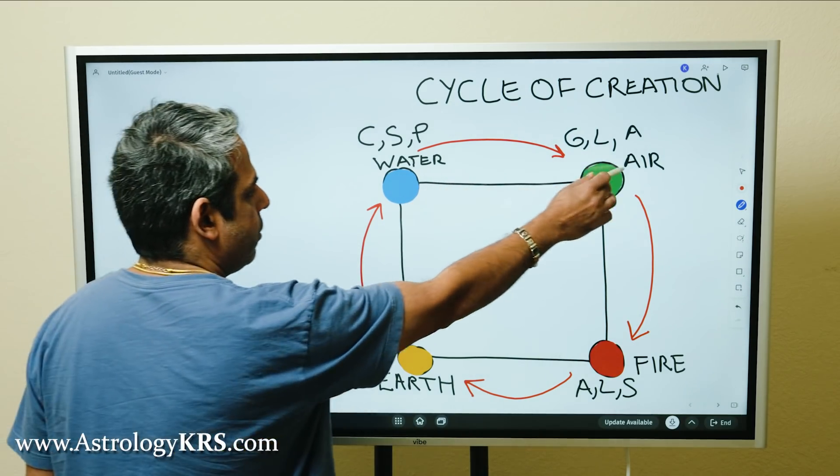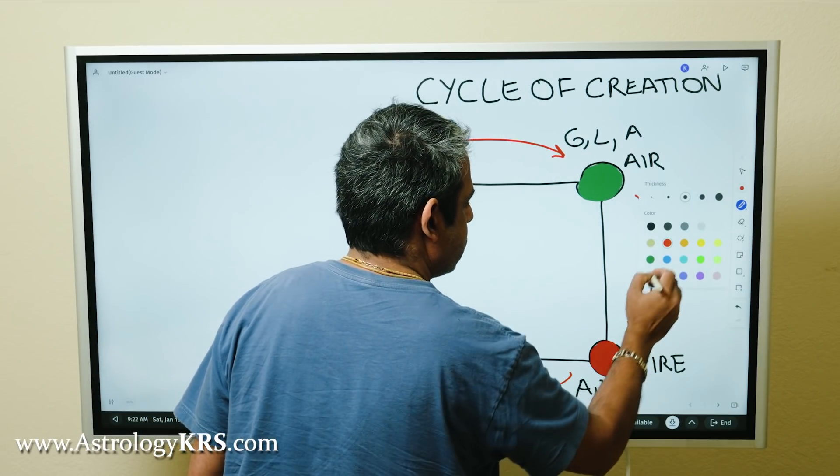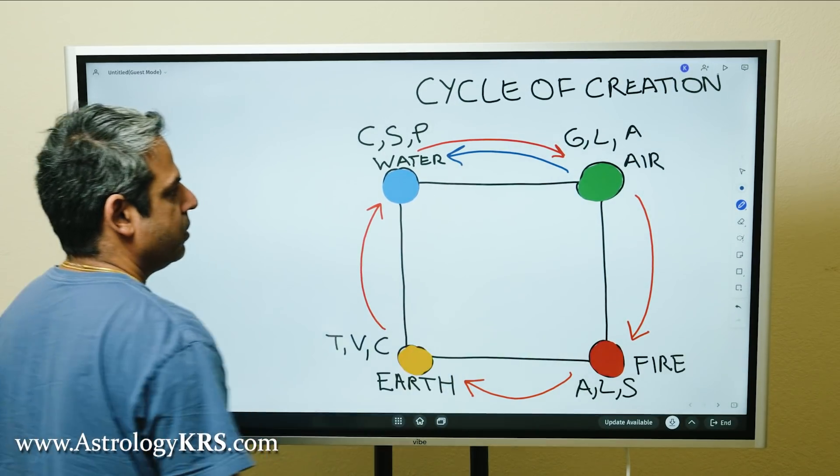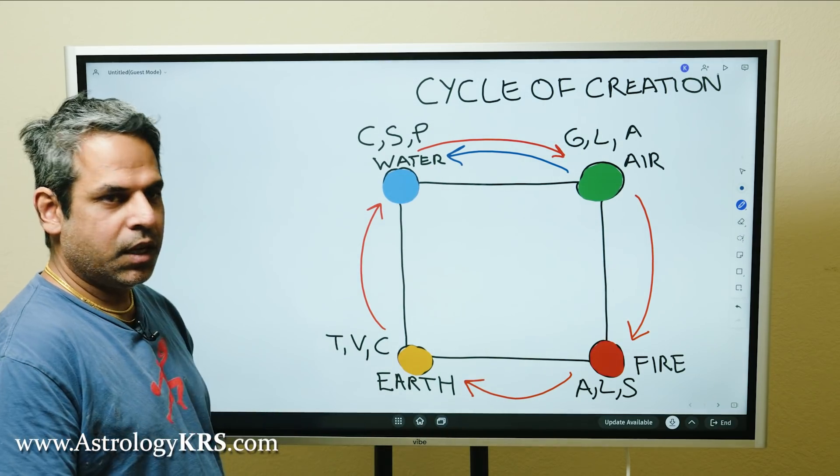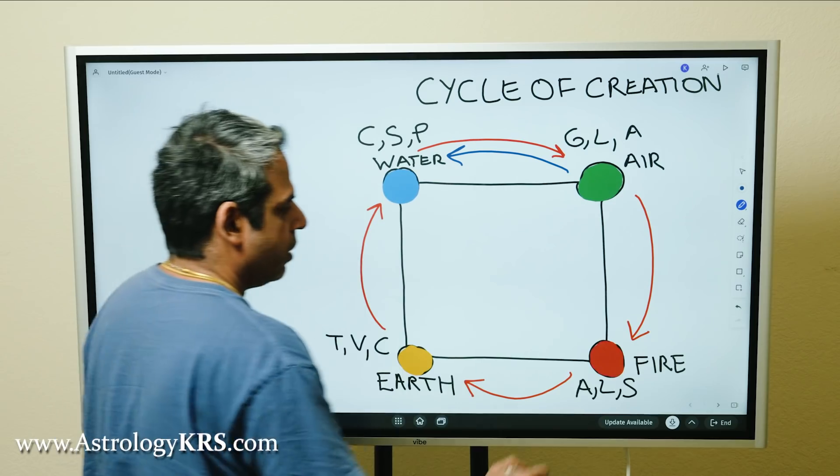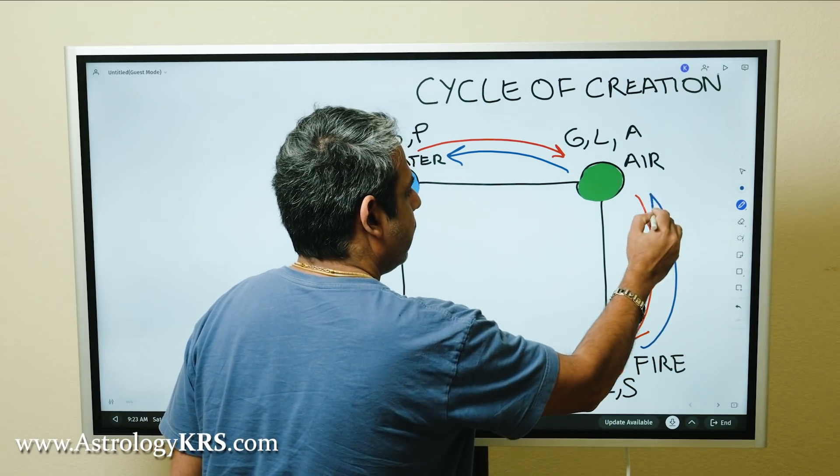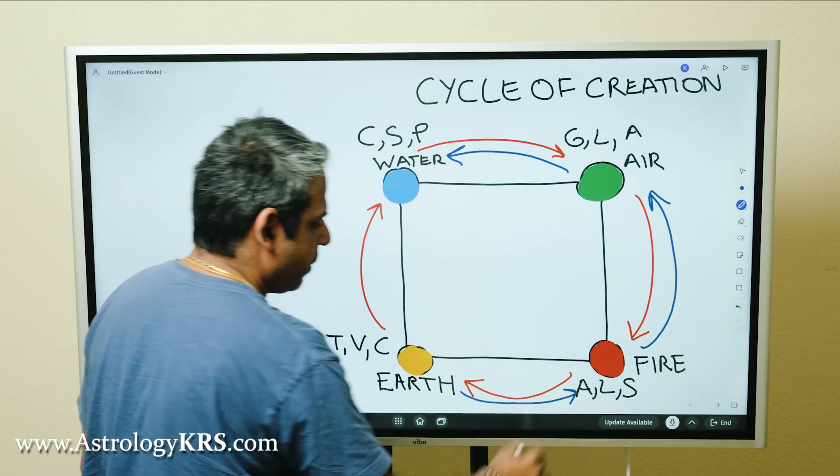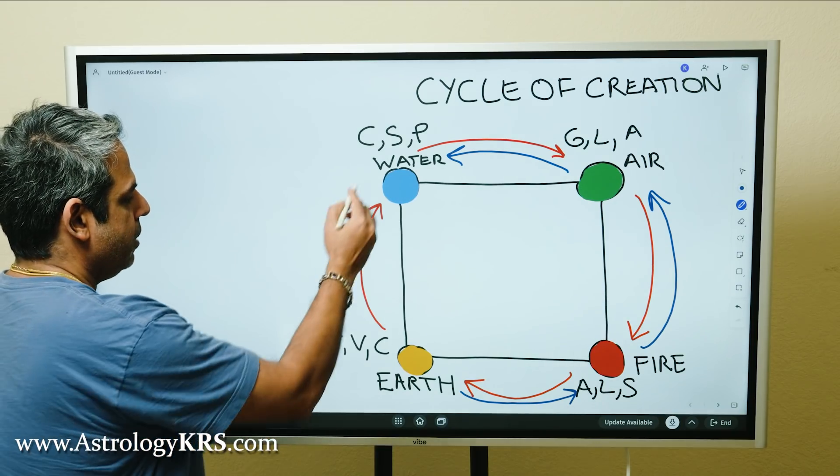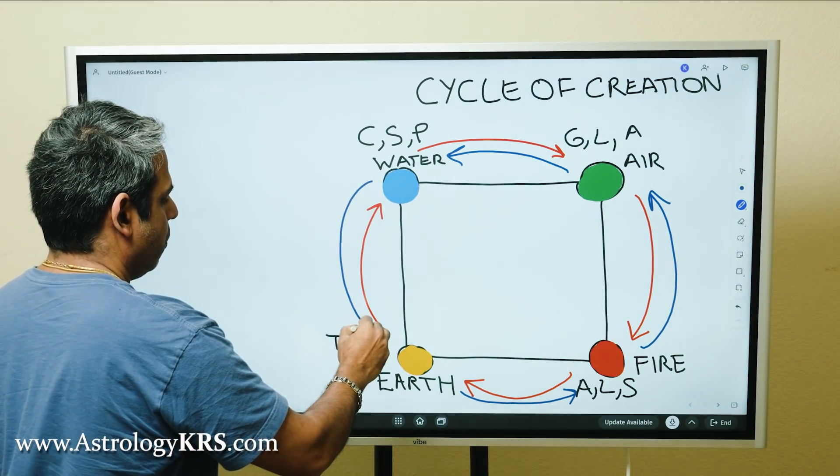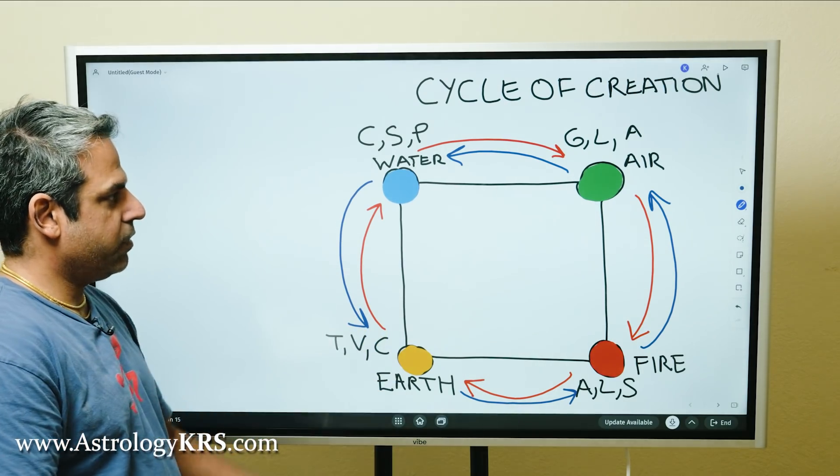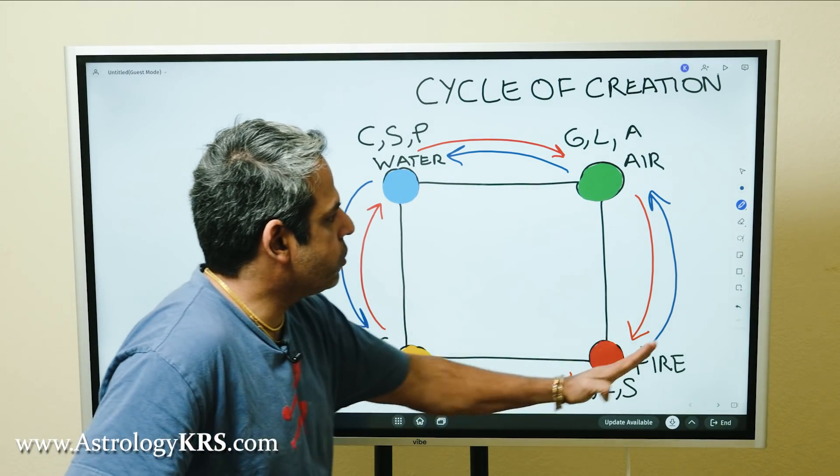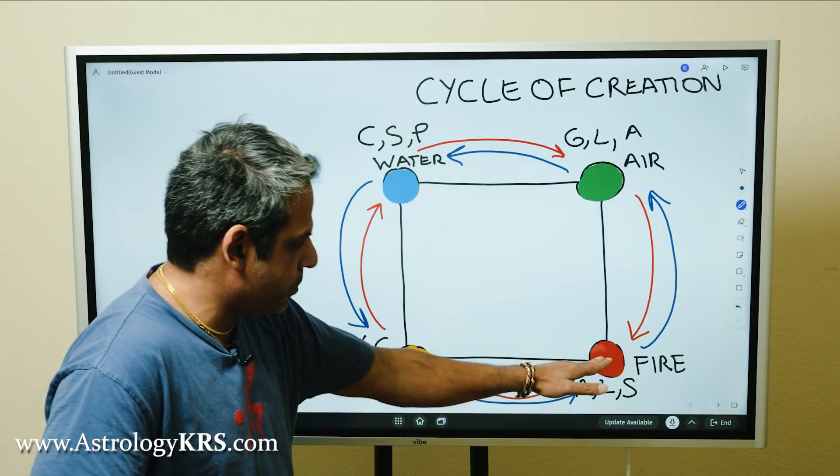So for air signs, water is the parent. For fire, air is the mother and father. For earth, fire is the mother and father. And for water, earth is the mother and father. So you see the cycle of creation happening, and when we go back we start to see who is the authority to create this particular element.